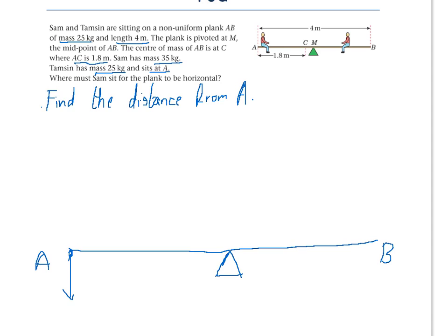So Tanzim has got a mass of 25 kg, so her weight is 25g. We are also told that Sam sits somewhere on the other side of the midpoint and his mass is 35 kg, so his weight is 35g.